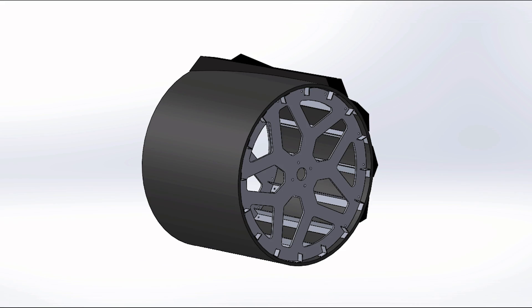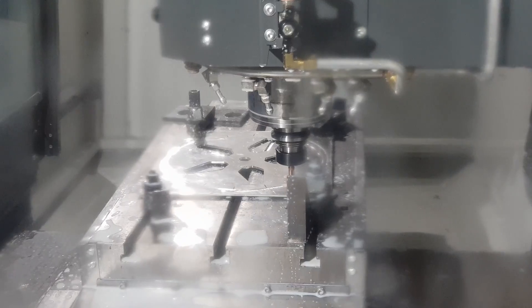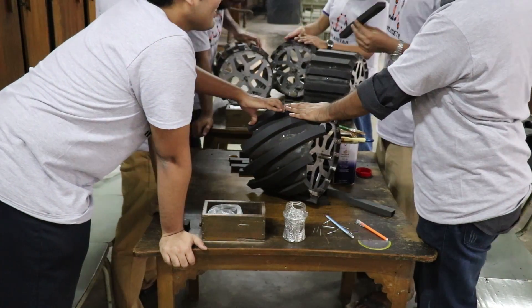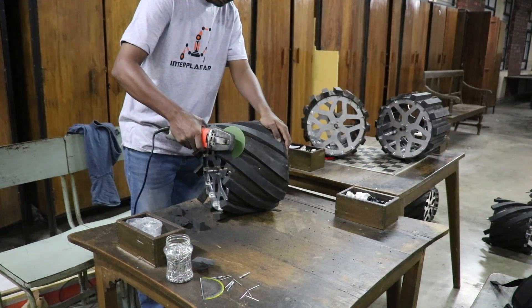For the mechanical part we have used CNC technology for precise machining of our custom designed wheel. We have used 6061 aluminum alloy for the wheel structure which has greater strength but lightweight and portable at the same time.